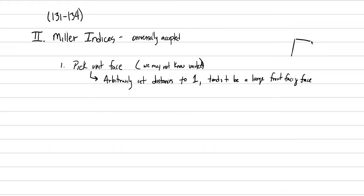So if we have a crystal — we draw the cube a lot, we'll try not to draw the cube today — we have our axes going through the crystal and we might say that this is our unit face, and we make all the other measurements relative to that. The next thing we do is we're going to determine our intercepts.